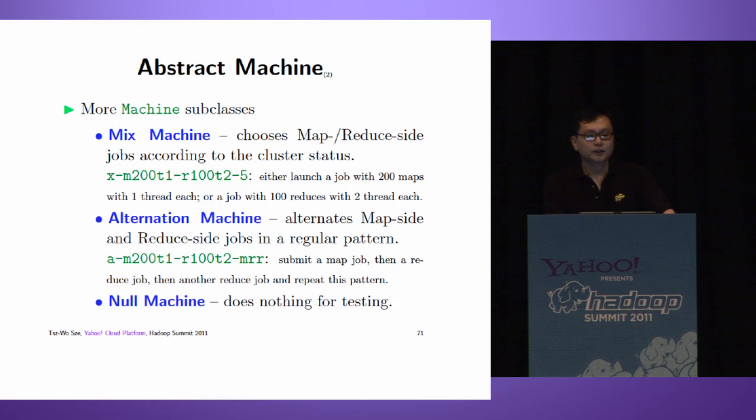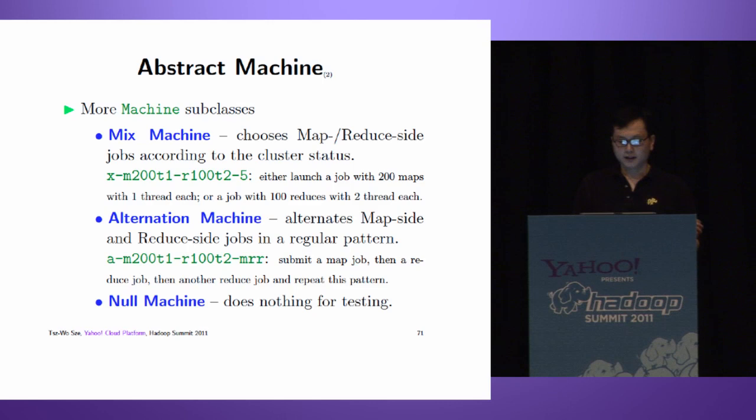We have more machines. Mixed machine chooses map-side job or reduce-side job according to cluster status. Alternation machine - you specify a pattern, then the machine follows your pattern to submit jobs. Null machine is for testing, to make sure you specify everything correctly before you really execute your job.